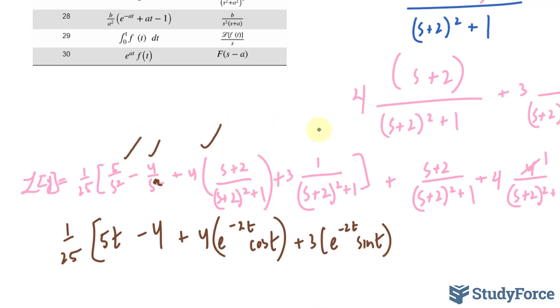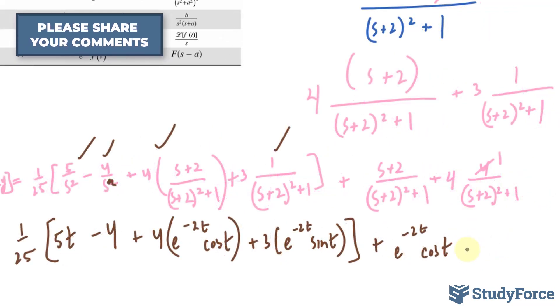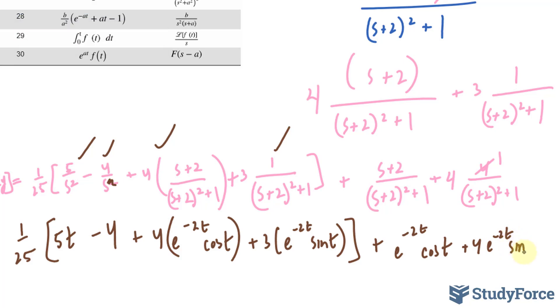We took care of that, that, this one, and this one. This term inverses into e^(-2t) cos t. And this 4 times e^(-2t) sin t.